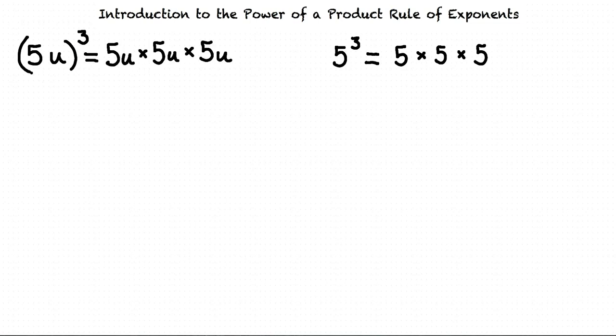So 5u to the power of 3 is the same as saying 5u times 5u times 5u. Earlier we discussed how a number next to a variable implies that they are multiplied. So we can rewrite our expression 5u times 5u times 5u as 5 times u times 5 times u times 5 times u.